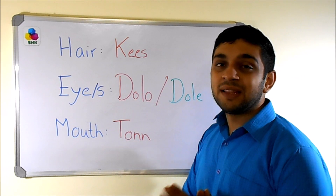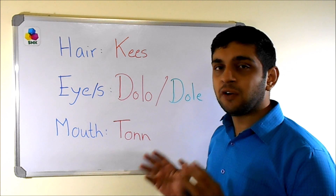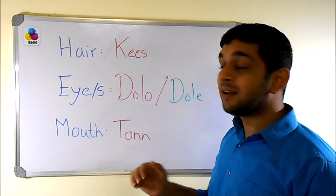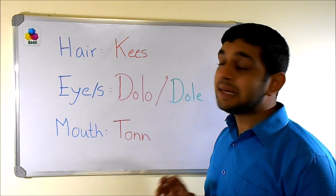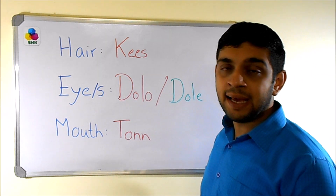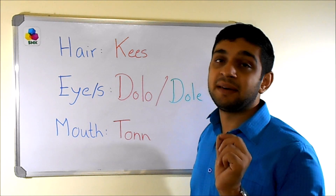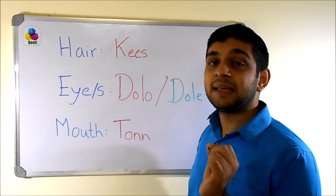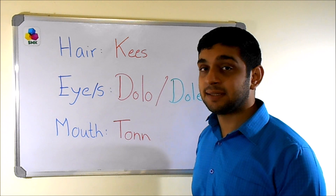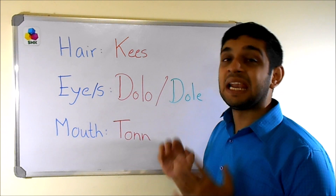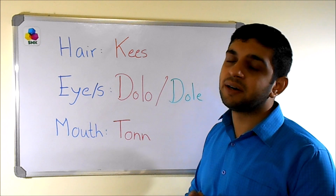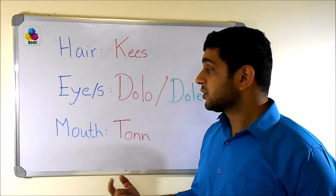Let's start with hair — obviously both singular and plural forms. Hair in Kokani is 'kiaans'. The 'ee' should be nasal: kiaans. It is not 'ki', it is 'kiaan', 'kiaans'. Like in English, it is singular or plural depending on how you use it.